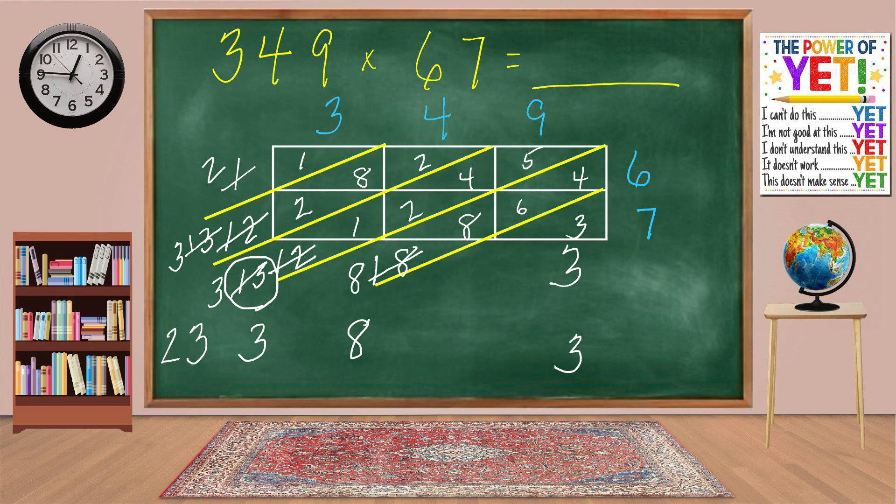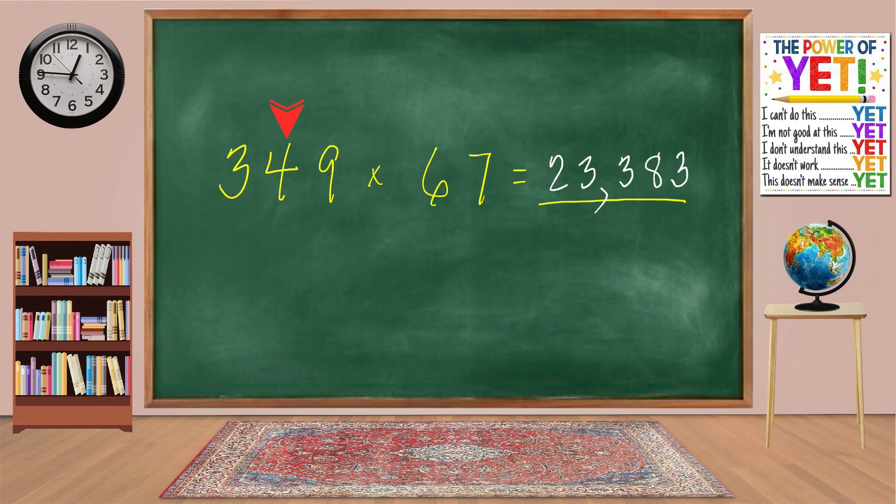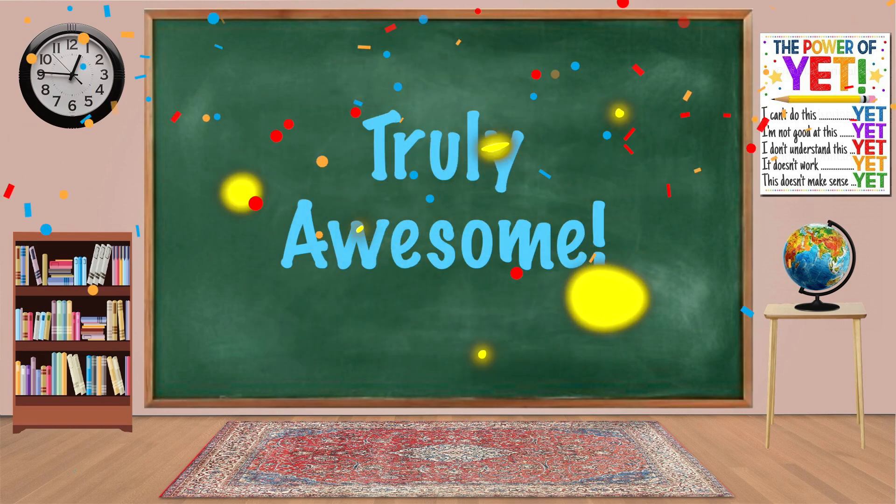We have the numbers from left to right. 2, 3, 3, 8, 3. Put them in the answer in that order. Add a comma to the left of the hundreds place. We've got our answer. 23,383. 349 times 67 equals 23,383. That was truly awesome.